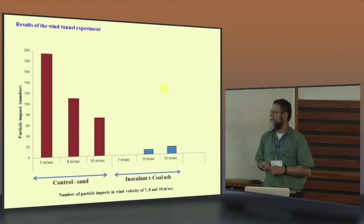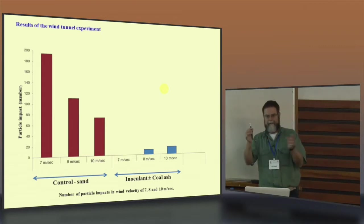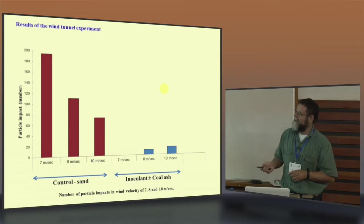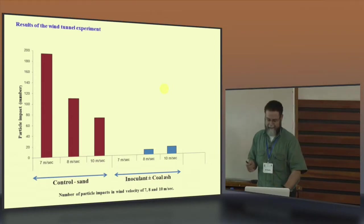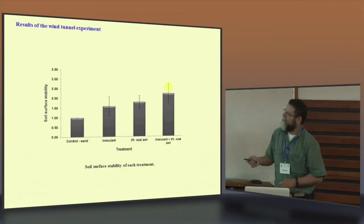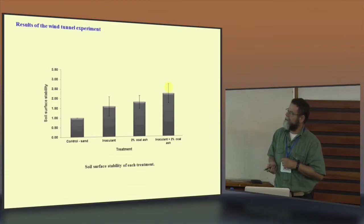This is the first result. This is the number of particle impact. We put a microphone over there, and with the wind, we measured the amount of the impact of the sand particles. You can see immediately, in the sand control, it was much, much higher with the inoculant plus minus the coal ash. So that gave us the idea that actually we are going in a good direction. When we look at the soil surface stability, the sand with the inoculant 2% coal ash and the inoculant plus coal ash were much higher stable than the control sand.